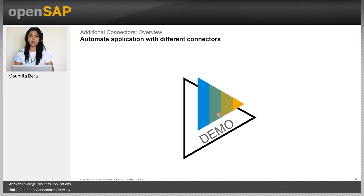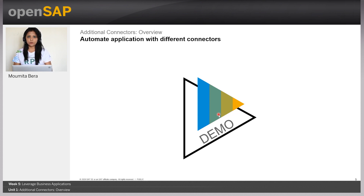In my next system demo I will show you two examples: how I have executed automations for a UI Automation application — that is a calculator application — and another to automate a SAP GUI application, which is booking an appointment. I will show you the execution of the automation, and in units two, three, and four I will show how to create those automation sequences.